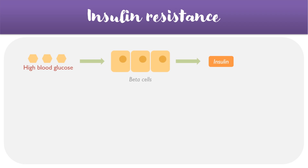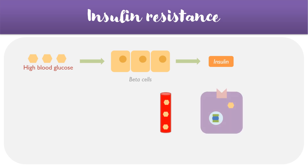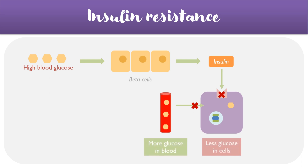What can happen in some cases is that patients may develop insulin resistance, usually due to a high level of blood glucose over time, and this is most commonly associated with type 2 diabetes. The normal process has beta cells producing insulin, but what can happen is that insulin does not act on the cells as well as it used to — in other words, there's insulin insensitivity or resistance. As a result, there's going to be less glucose able to enter the cell via the blood, and therefore more glucose in the blood and less glucose in the cells.